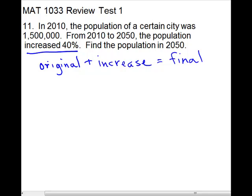This time we know the original, which is 1,500,000. That's the population in 2010. So that's where we were starting. Our increase is 40%. Switch it to a decimal. So drop your percent and go two places to the left. So it's going to be 0.40 or 0.4. Times our original. And that will equal our final.